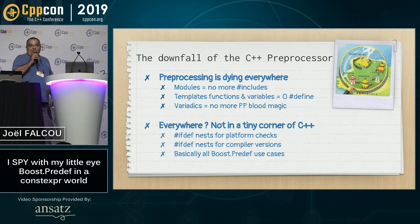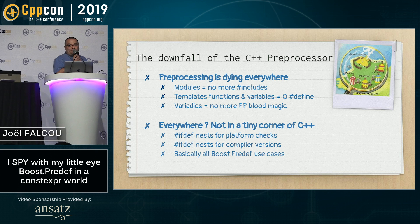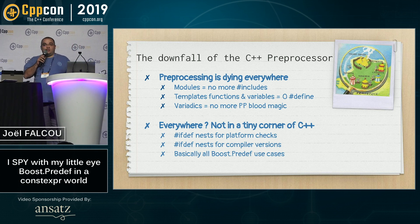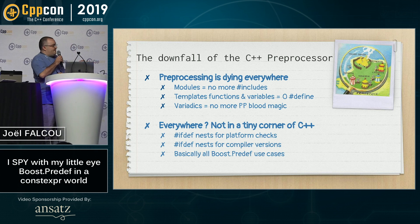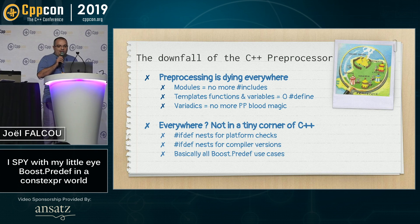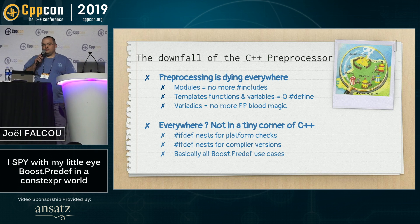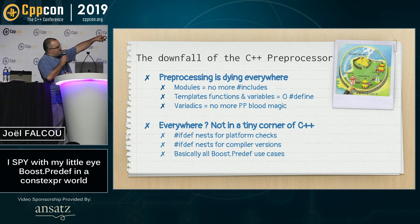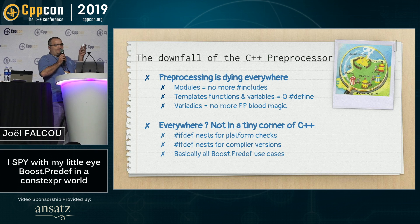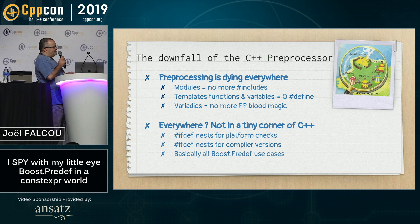Except for one little thing: actually using #ifdef and #if defined for platform checks, compiler version, overloading, and so on. It was free there, and it's very complicated to get something done nicely in post-C++17. We still need those things sometimes. Even __has_include, which helps a lot to avoid testing for a platform before including something, is not enough.